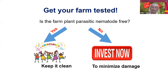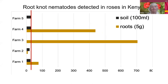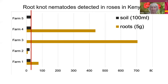If you do have a problem, you have to do something about it. One of the first things you have to do — before that, I always forget this — is that yes, you do have a nematode problem in ornamentals. For example, in roses in Kenya, we've sampled quite a number of farms.